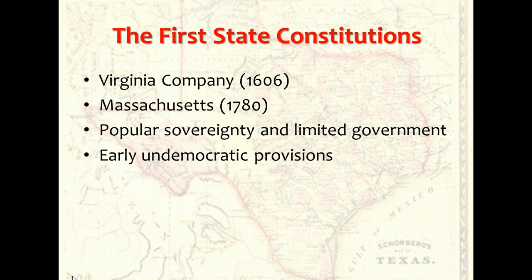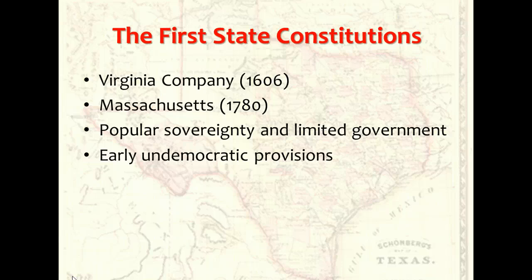The First State Constitutions. From the beginning, government in this country has been based on written constitutions. In fact, the United States has sometimes been described as a land of constitutions. Each of the 50 states has a written constitution. America's experience with these constitutions dates from 1606, when King James I granted a charter to the Virginia Company. That act led to the settlement at Jamestown in the following year, and with it, the first government in British North America. Later, each of the other English colonies also established and governed on the basis of a written charter. Most of the colonial charters served as models for the first state constitutions.